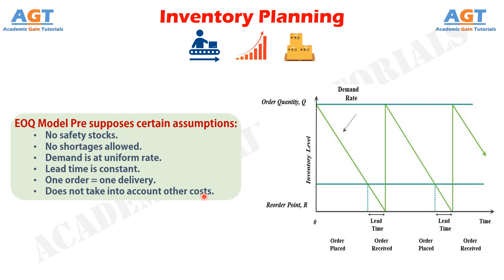In this Economic Order Quantity model, as demand increases and production consumes inventory, the inventory gets depleted. When it drops to a critical point, the reorder process is triggered and a new order is placed for a fixed quantity. Upon receipt, the inventory level goes back up. Using this model, further data extrapolation is possible to determine how many orders to place in a year and the time lapse between orders. It is also used to determine the order size and production lot for work-in-progress inventory supplied to the next stage of production or to the customer.